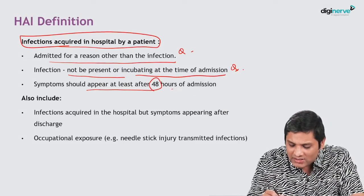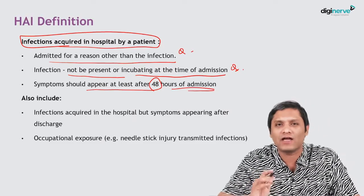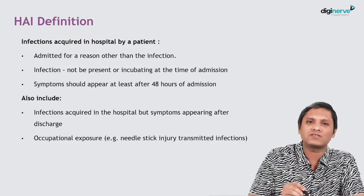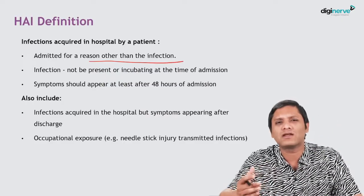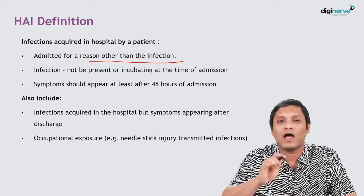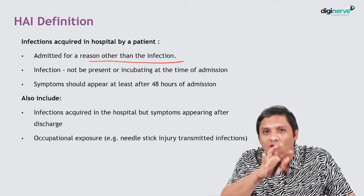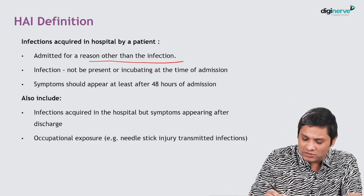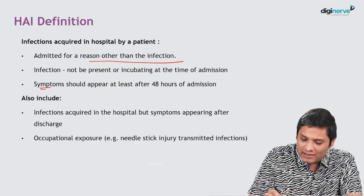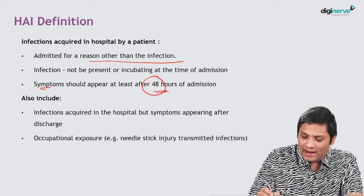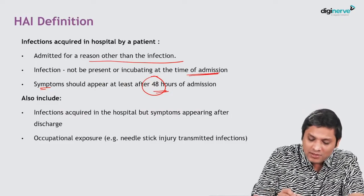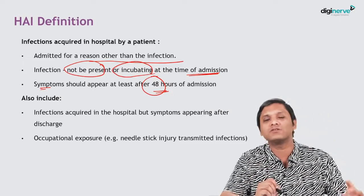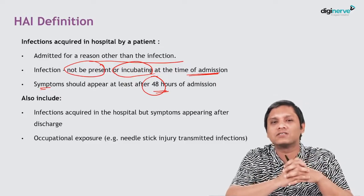The third criteria is that symptoms should appear at least 48 hours after hospital admission. So to summarize, HAI or healthcare associated infection has three components: first, the patient should be admitted for some other reason, not for the infection being named as HAI. Second, the symptoms should appear at least 48 hours after admission. Third, at the time of admission the symptoms should not be present.